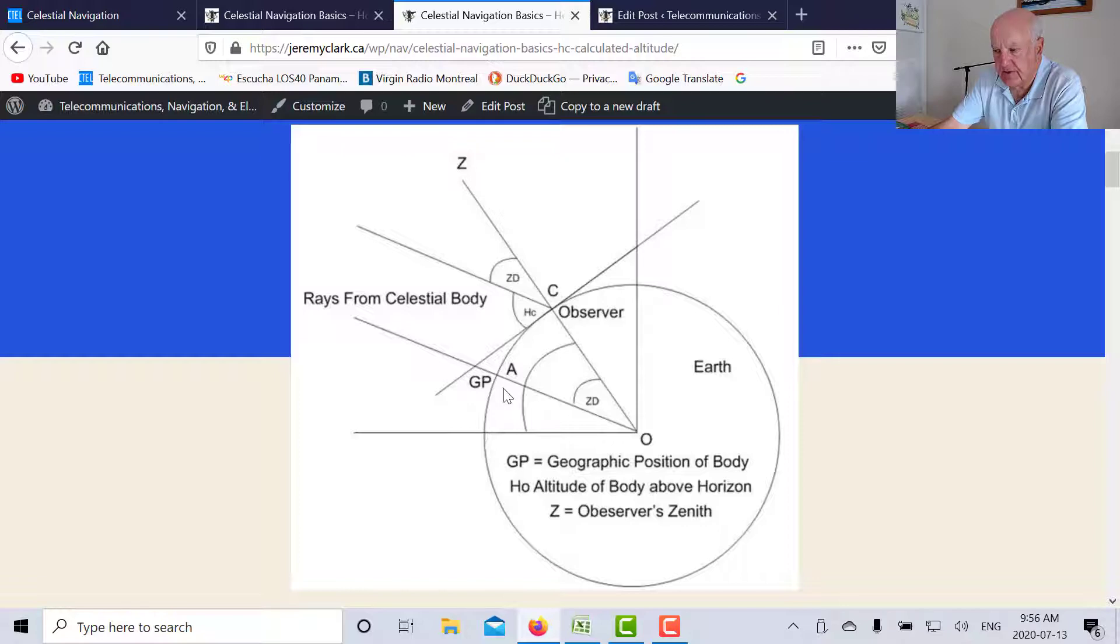Now the nautical almanac lists the GP for the Sun, the planets, and 57 navigational stars for every hour for the whole year. So we can determine from the nautical almanac where the GP was for the sun on July the 6th at our average time of 16.06 GMT.